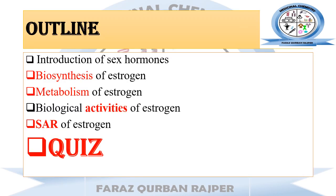Now let's have a look at the outline of this lecture. At the end of this lecture you will be able to learn about the brief description, examples of different types of sex hormones, biosynthesis of estrogen, metabolism of estrogen, biological activities of estrogen, and most importantly the structure activity relationship of estrogen — including the structure of estrogen, how it differs from other steroid hormones, and the different types of estrogen derivatives.